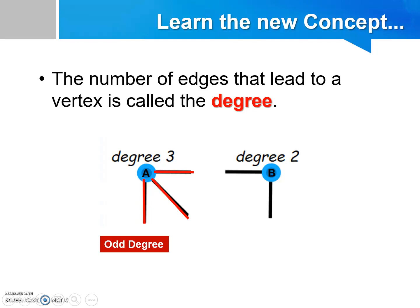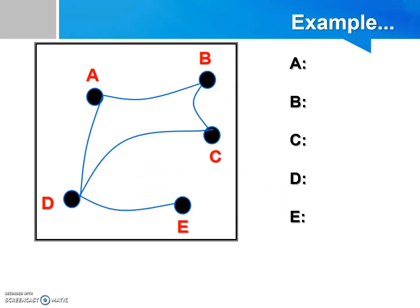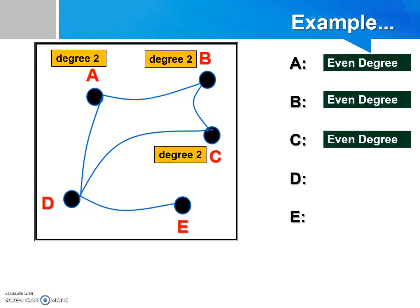While for vertex B, it has degree of 2, as there are 2 edges leading to vertex B. And of course, we can call vertex B an even degree because 2 is an even number. For example, the vertices A, B, and C in this network are even degree, as each vertex has degree of 2. However, for vertex D, there are 3 lines leading to the vertex. Hence, it has degree of 3 and it is an odd degree.